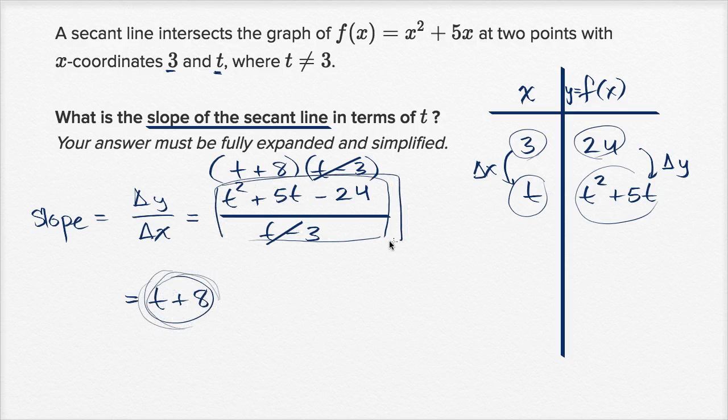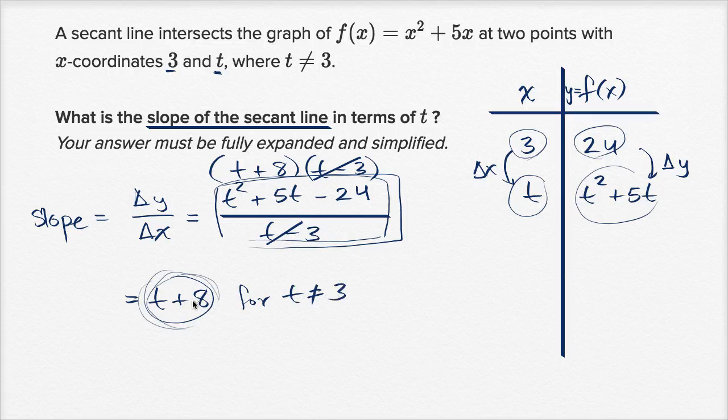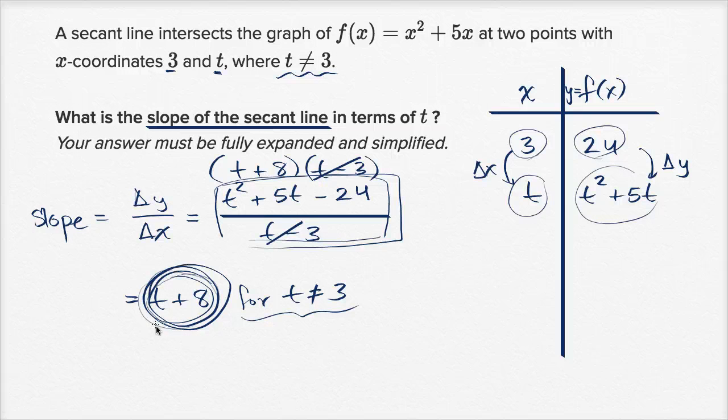But this thing up here was not defined at t equals 3. So if you wanted to be particular about it, if you want this expression to be the exact same thing, you would say for t does not equal 3. Now this can take the same inputs as this one right over there. But I guess they're assuming where t does not equal 3. So you could view this as maybe a little bit redundant. But this is the slope of the secant line in terms of t.